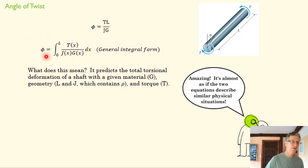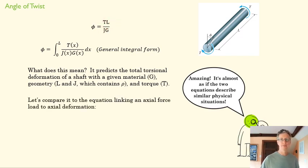But we could find that angle of twist even if those things change. What this equation does is predict the total torsional deformation, an angle of twist, for a given material defined by G, a given shaft size defined by L and J, and a given torque T.